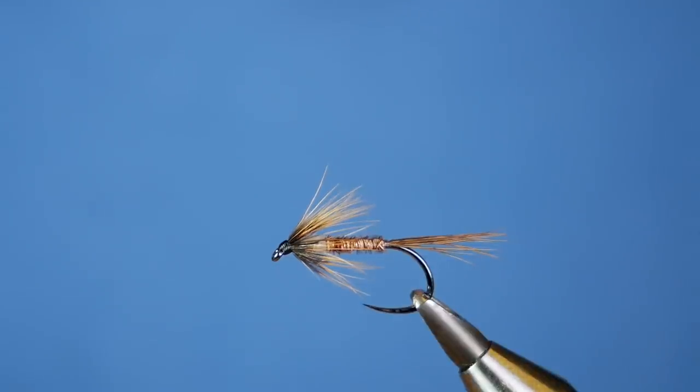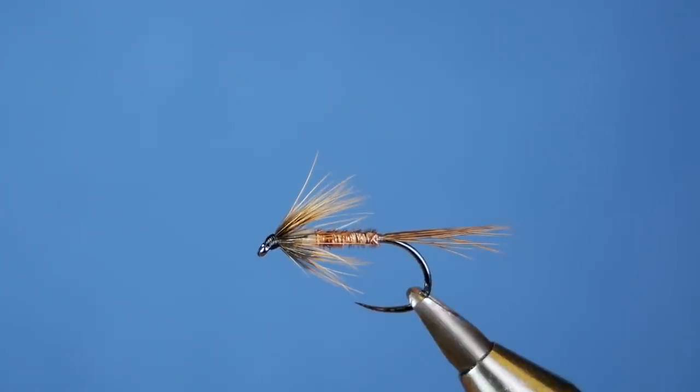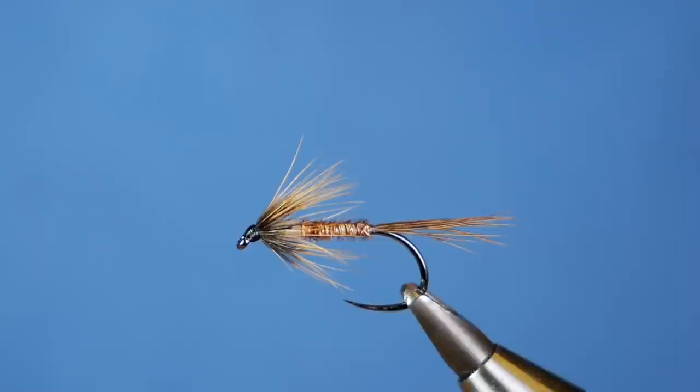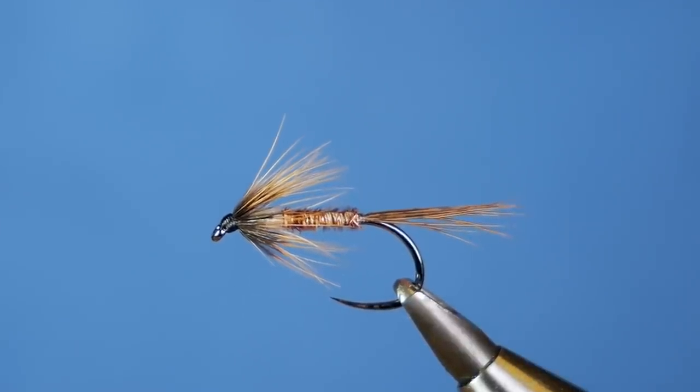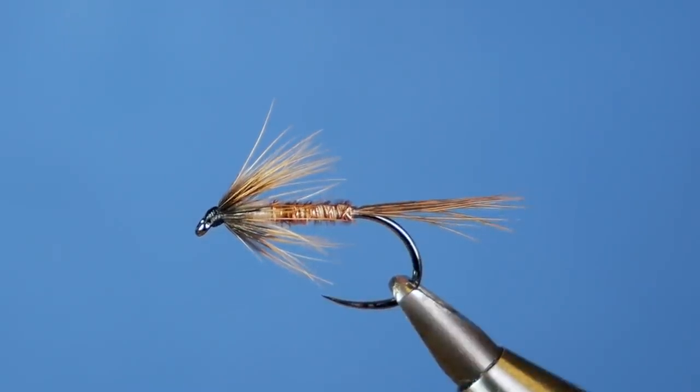Hi folks, thanks for joining me for this week's stillwater tutorial. What you see in the vise is a variation on the cruncher, and I know it says accidental killer, but there's a little story behind that and I'll tell you all about it in the upcoming video. So without further ado, let's get into it.